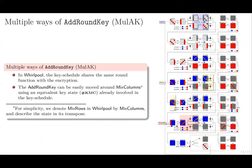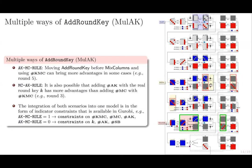The next point is dedicated to the hash function Whirlpool. Due to the identity between its encryption and the key schedule, the round key can be moved easily around the MixColumns using an equivalent key state which is already involved in the key schedule. Moving forward or staying as it was, one choice might have an advantage over the other at different rounds. Thus, we integrate the consideration of both choices into one model.